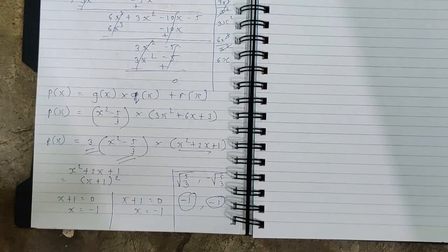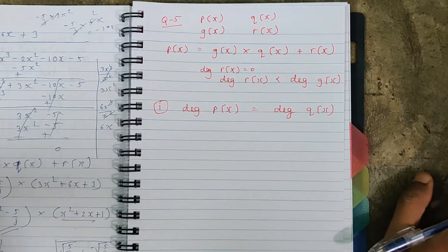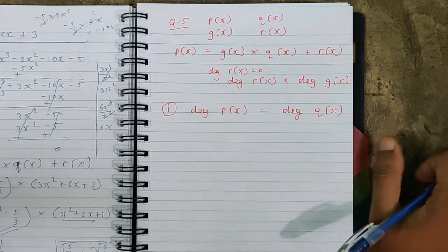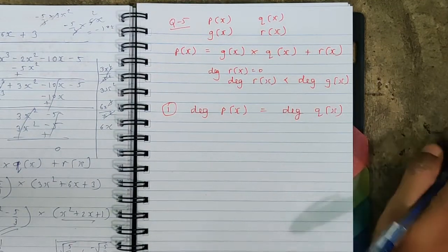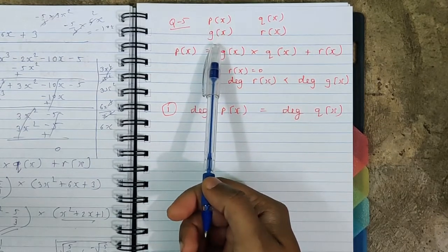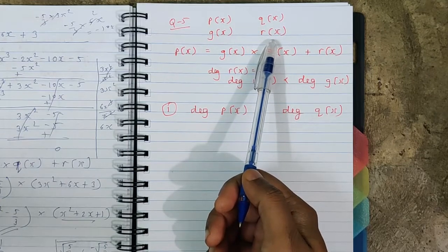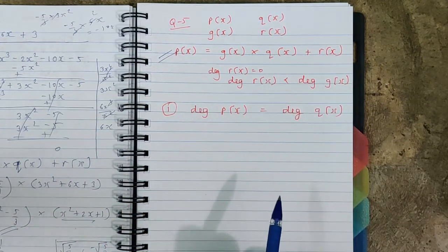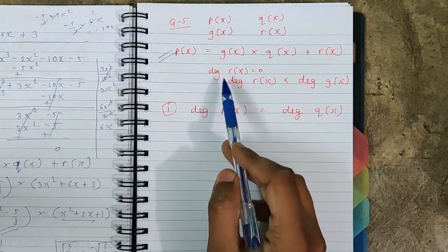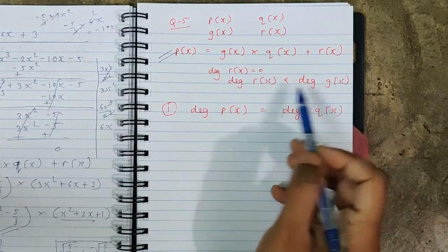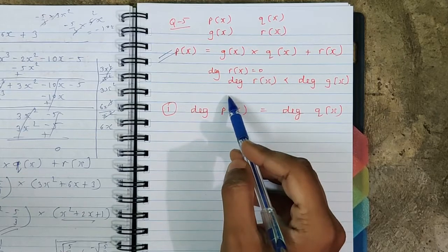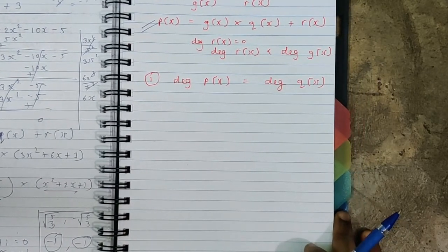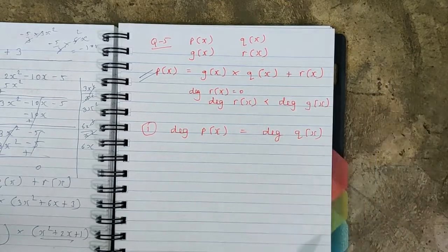That is how we solve such questions. Now let us see question number five from Exercise 2.3 — easy but a little tricky because we need to follow certain rules. We have to give examples of polynomials p(x) (dividend), g(x) (divisor), q(x) (quotient), and r(x) (remainder) that satisfy the division algorithm for certain given cases. Before starting, note that the degree of the remainder can be zero and must always be less than the degree of the divisor.